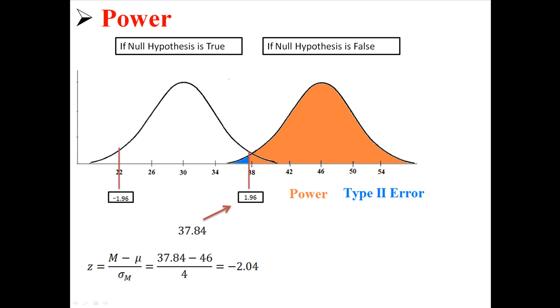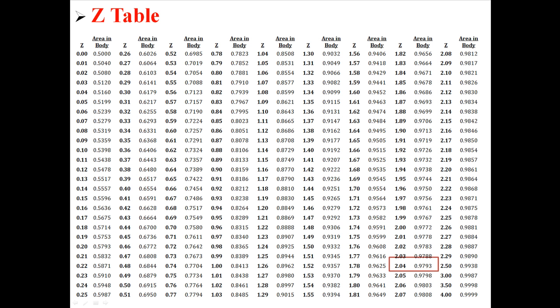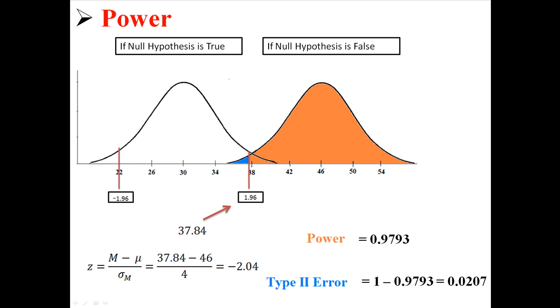So now in order to find the area in the body, I'm going to go to a z-table and I'm going to look up 2.04. And when I look up 2.04, it says that the area in the body is 0.9793. 0.9793 is the power. So it's about 98%. And anything that's left over, 1 minus 0.9793, that 2% is the type 2 error.